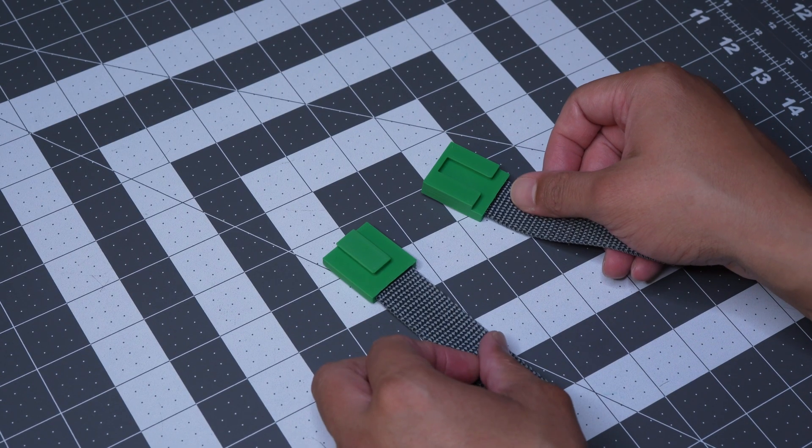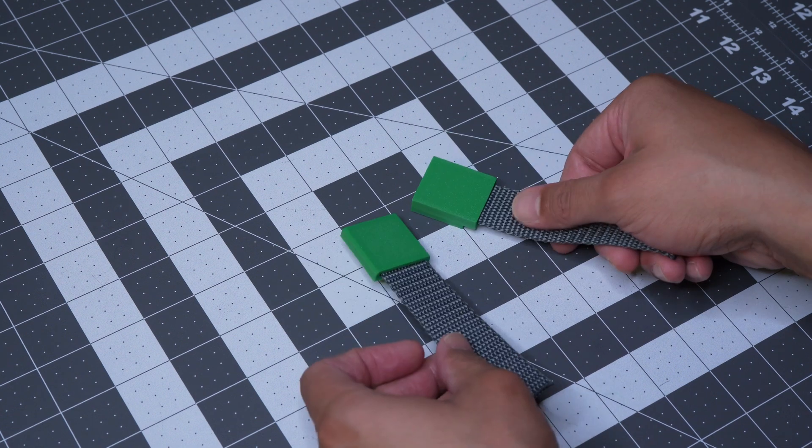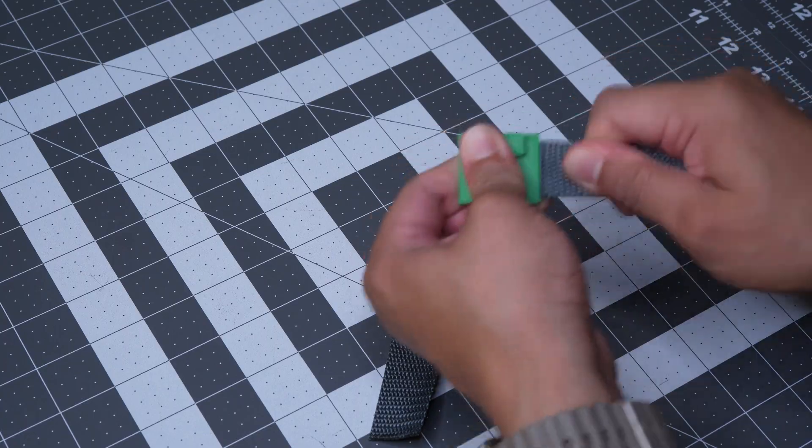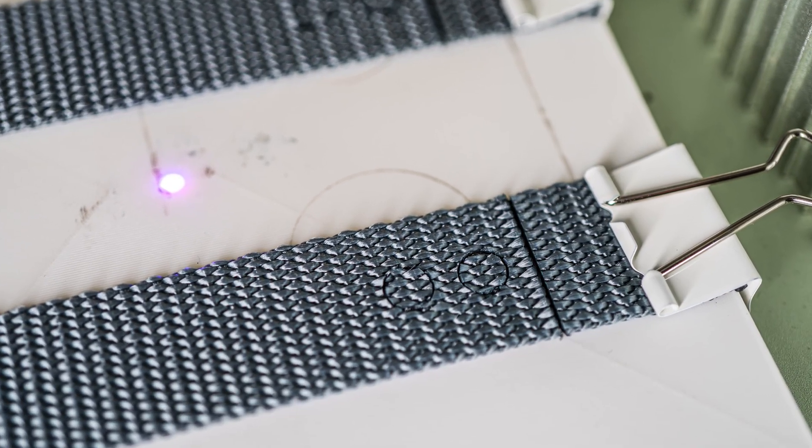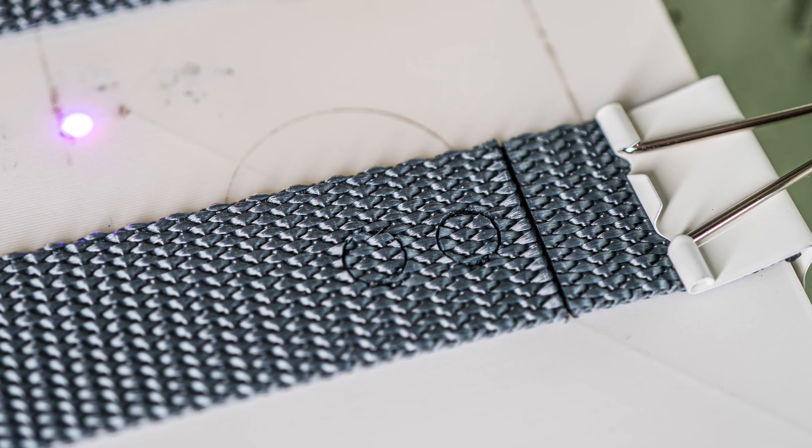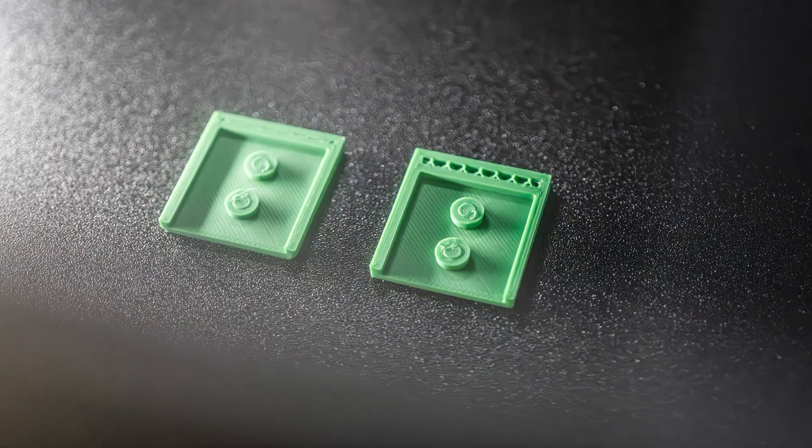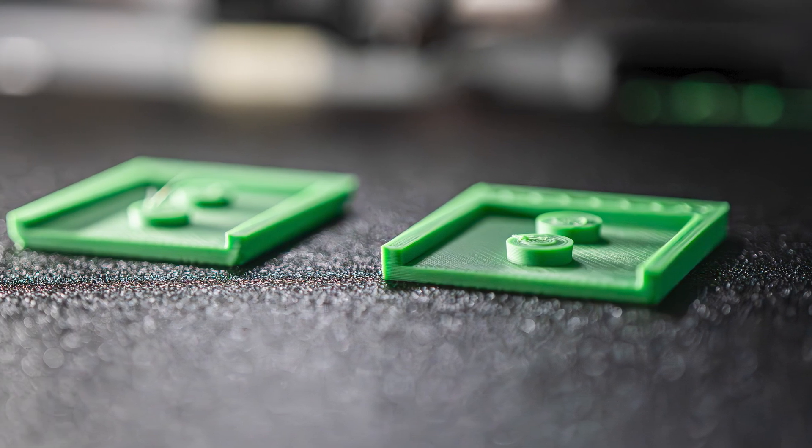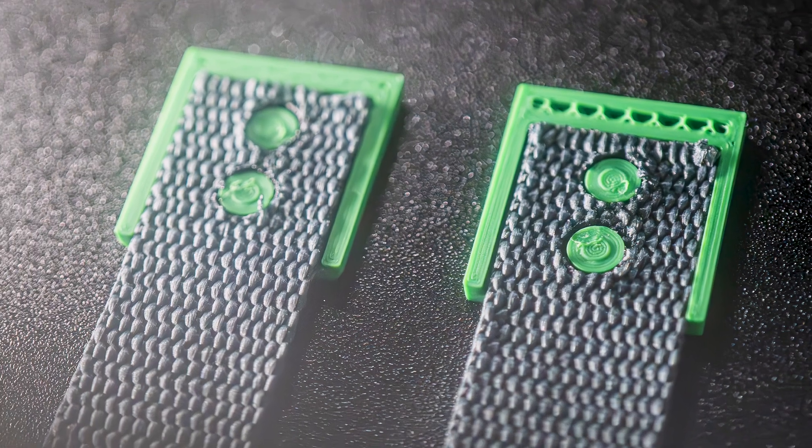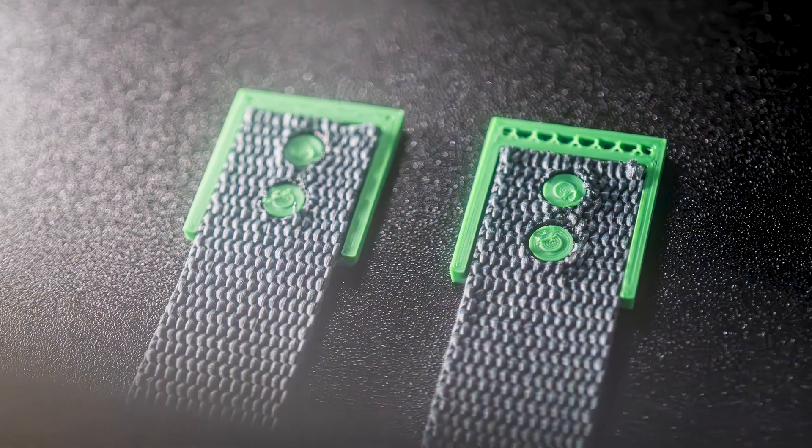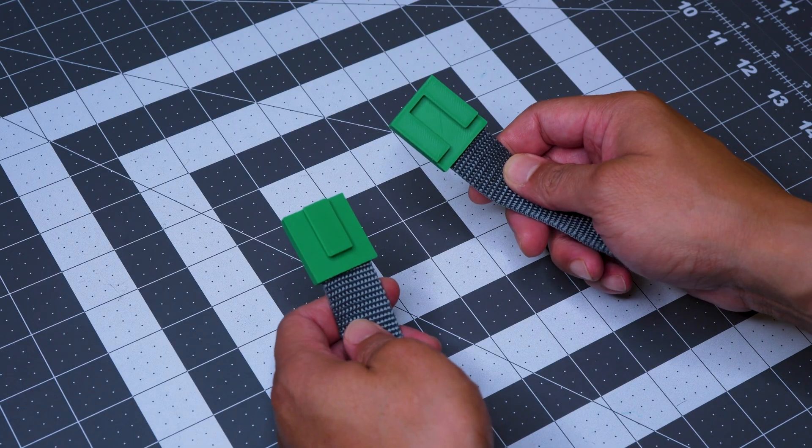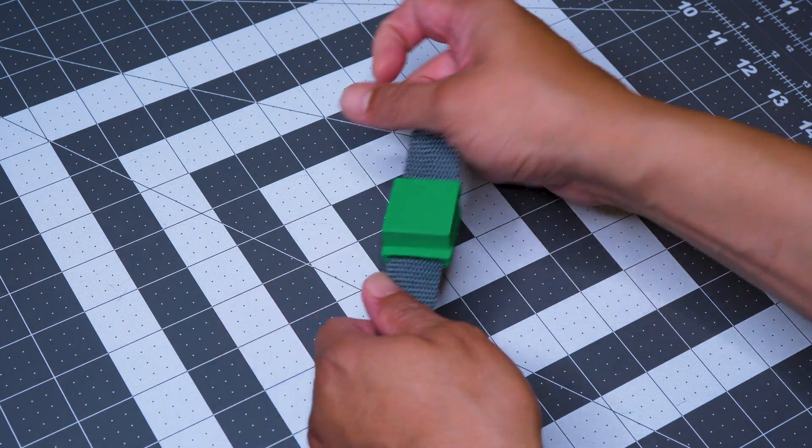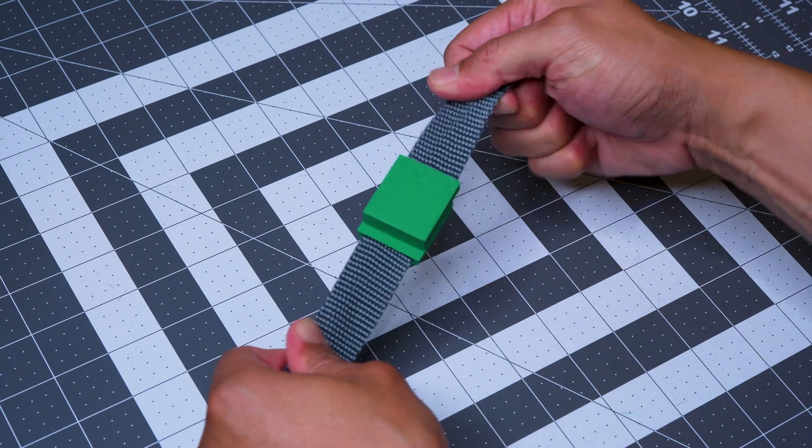We also realized that because the laser engraver allows fairly precise cuts, we could use that to create interface points between textiles and 3D prints. Here we set up to cut two 7mm holes in some nylon webbing to correspond with two 7mm internal posts designed into a 3D model. We paused the print partway through so that we could place the webbing onto the posts before the print completed. This is actually very similar to the process of embedding magnets that we've outlined in a previous video. The result is a pretty strong integration between the two parts.